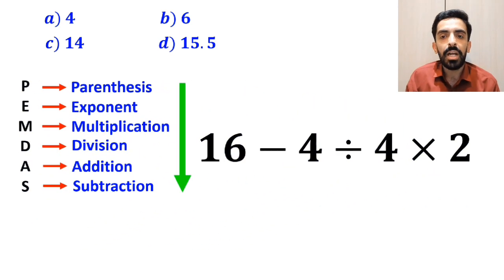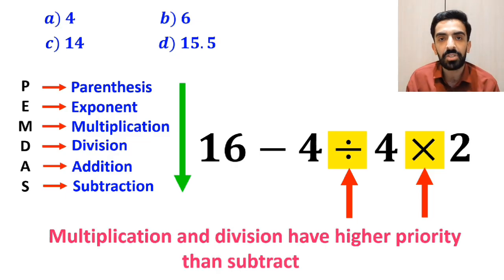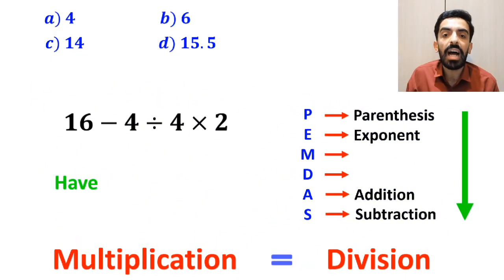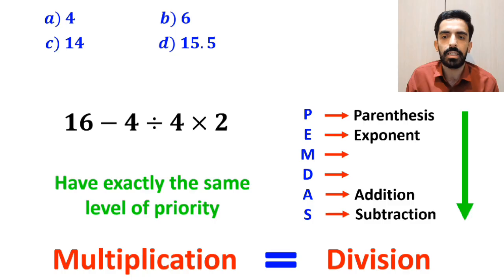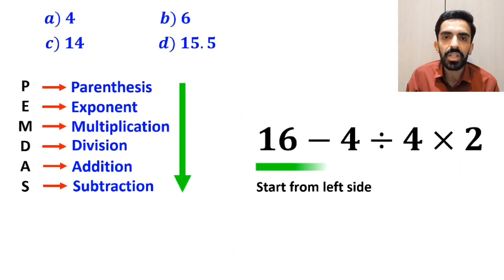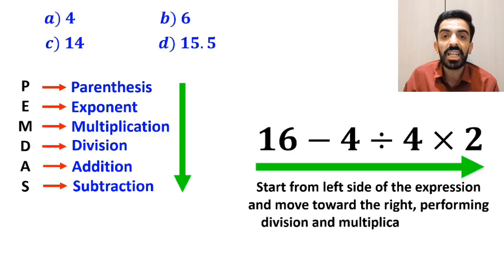In the next step, we need to handle the division and multiplication, since multiplication and division have higher priority than subtraction. However, it's very important to note that in the PEMDAS rule, multiplication and division have exactly the same level of priority. In this situation, the best thing to do is to start from the left side of the expression and move toward the right, performing division and multiplication in order.